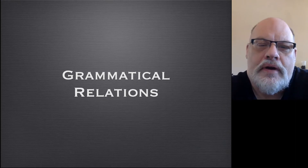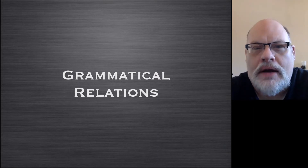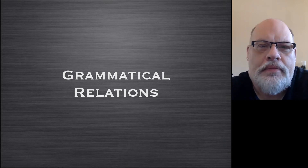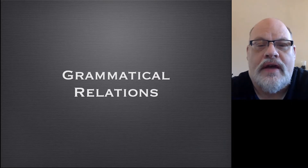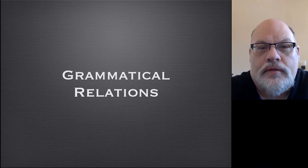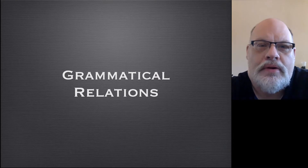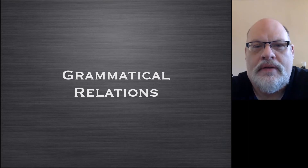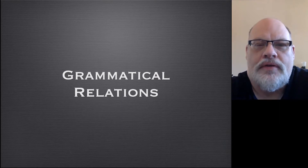Grammatical relations are things like subject, object, indirect object — those are the things we call grammatical relations. Now most people would define grammatical relationships as things like: the subject is the doer of the sentence, or the subject is the topic of the sentence, or the subject is the thing that the sentence is about. But these are all problematic once you probe a little bit deeper. So generative grammarians have eschewed these kinds of semantic notions for defining grammatical relations, and instead use purely structural relationships to define grammatical relations.